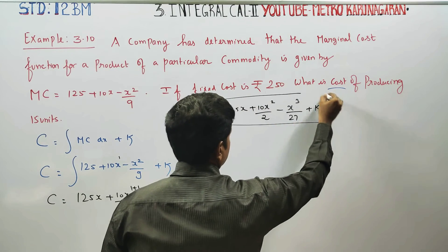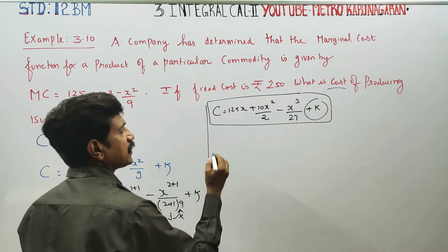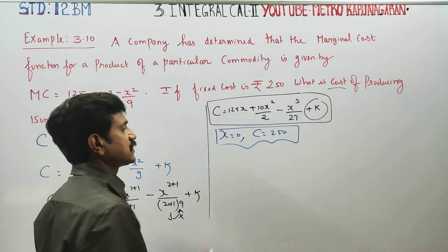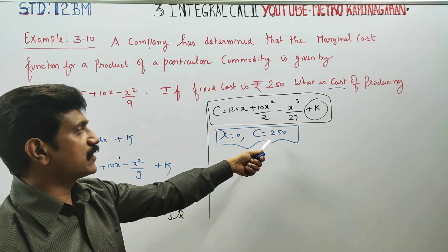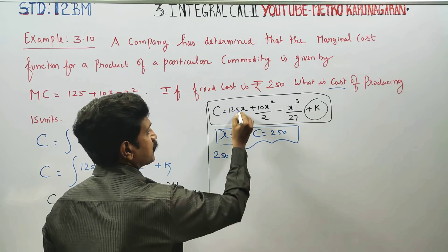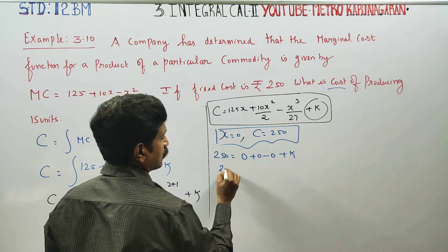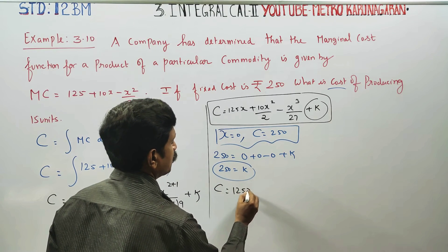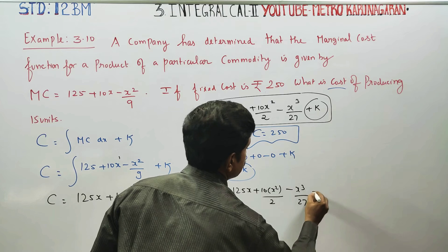If the cost at a fixed level is given — the fixed cost is 750. For example, when x equals 0, C equals 750. You can set the K value. So x equal to 0, C equal to 750, which gives K equal to 750. Substituting K, the cost function is ready: C equals 125X plus 10X squared by 2 minus X cubed by 27 plus 750.